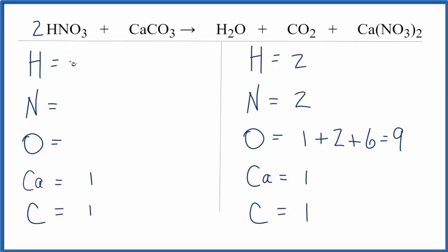So we have one times two, so that gives us two hydrogens, one times two, two nitrogens, and then for oxygens, three times two is six, plus the three right here. That gives us nine of those oxygens.